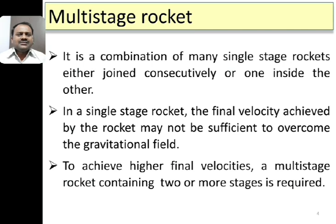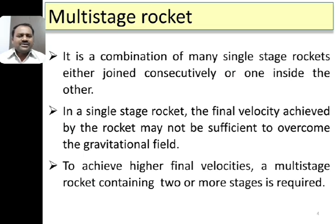In general, a multi-stage rocket is a combination of many single-stage rockets. They are either joined consecutively, that is one after the other, or one inside the other. In a single-stage rocket, as discussed in the previous video, the final velocity achieved by the rocket after complete burning out of the fuel may not be sufficient to overcome the gravitational field.